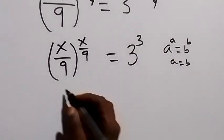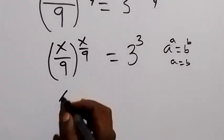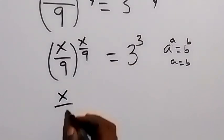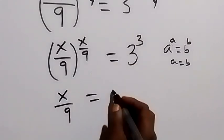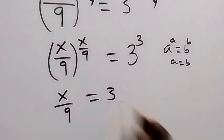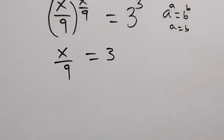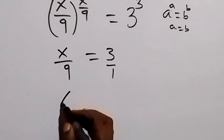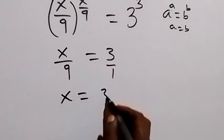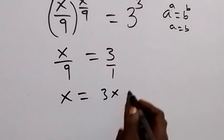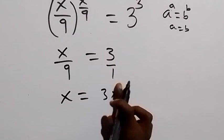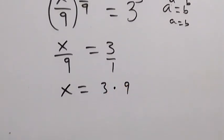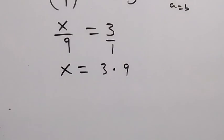From here we can equate the bases: x over 9 equals 3. This is the same as 3 over 1, so when we cross-multiply we have x equals 3 times 9.